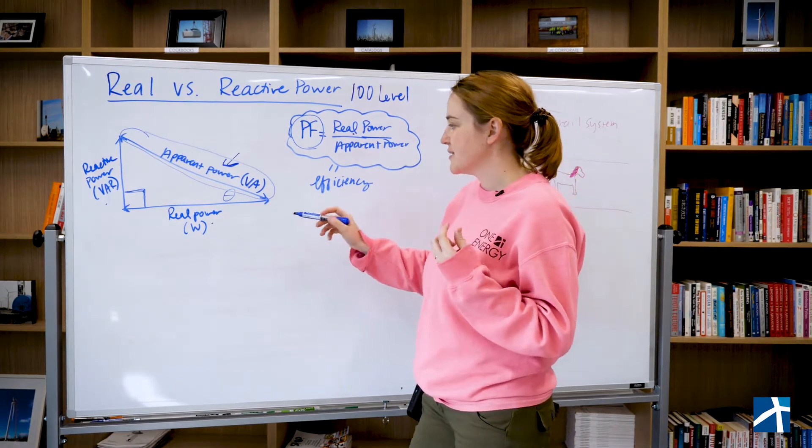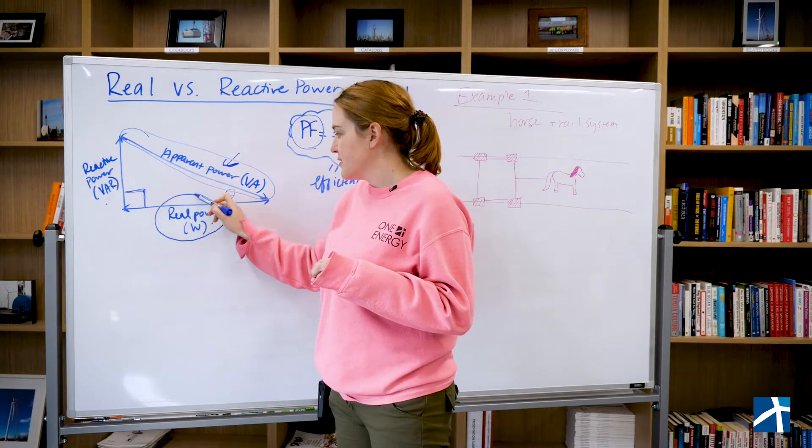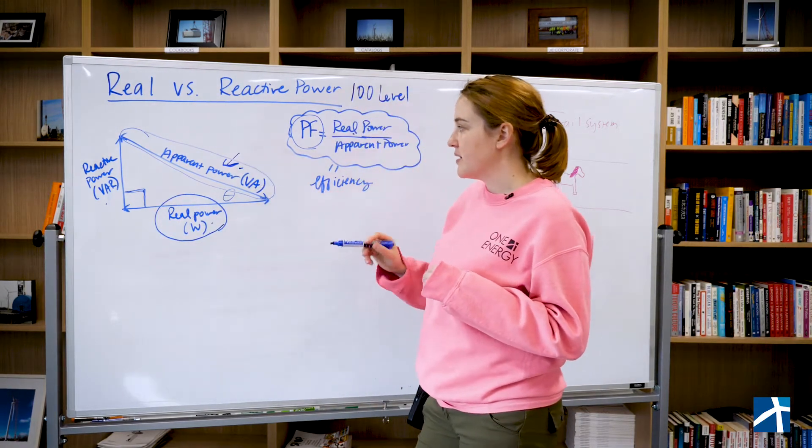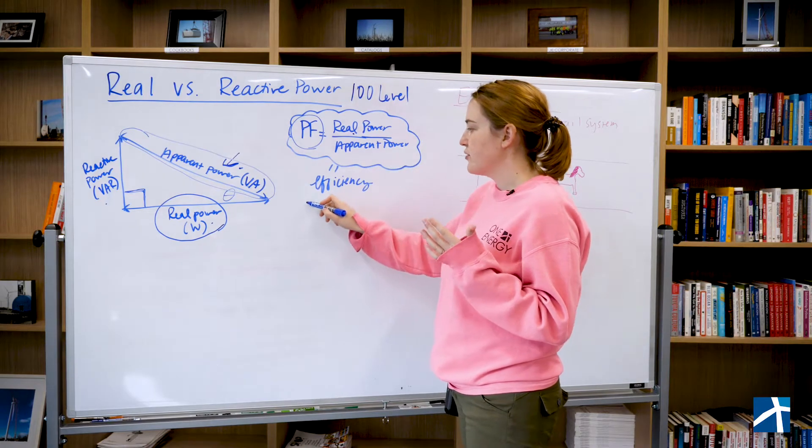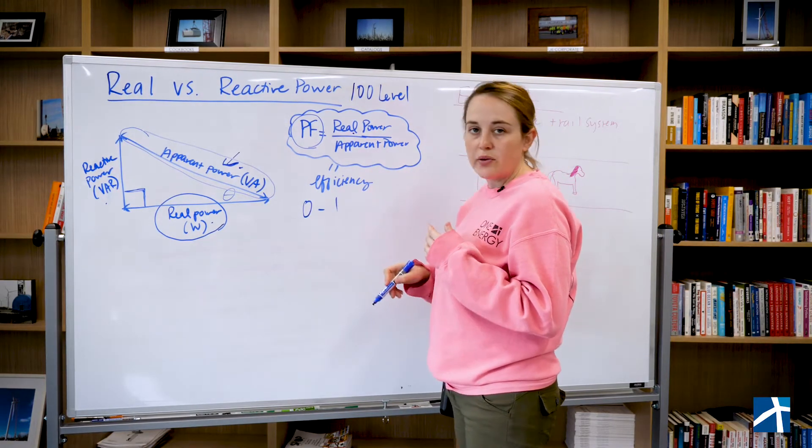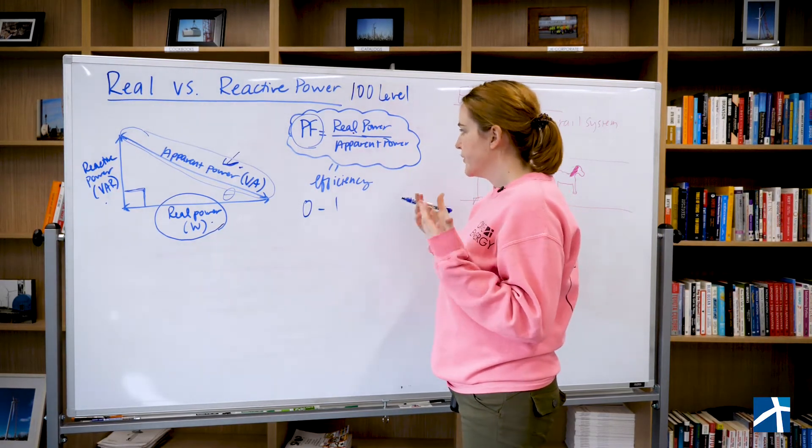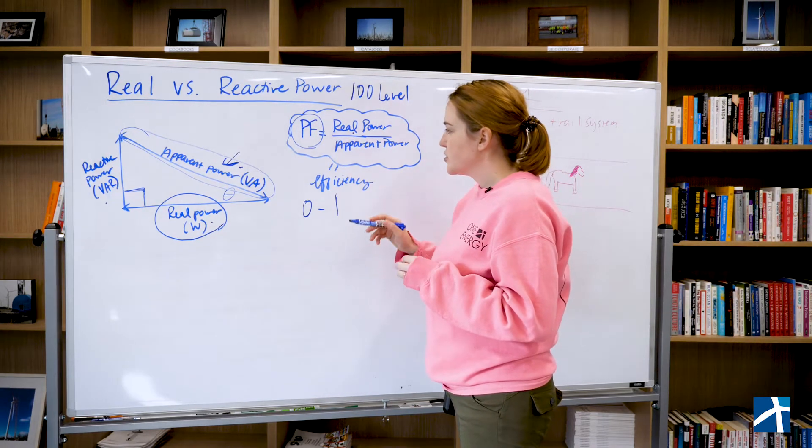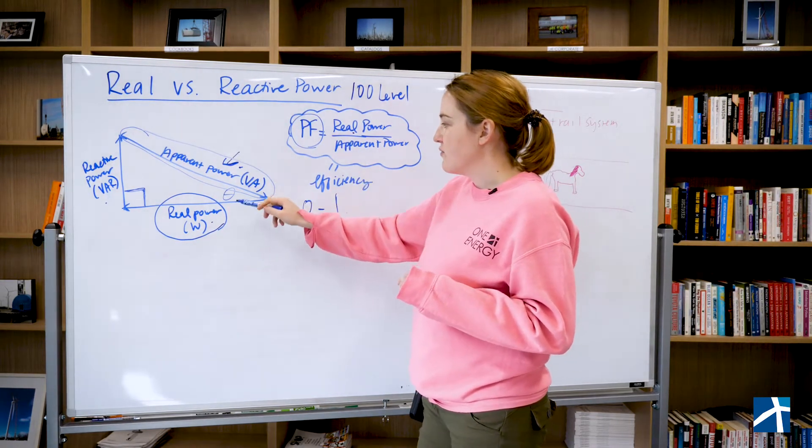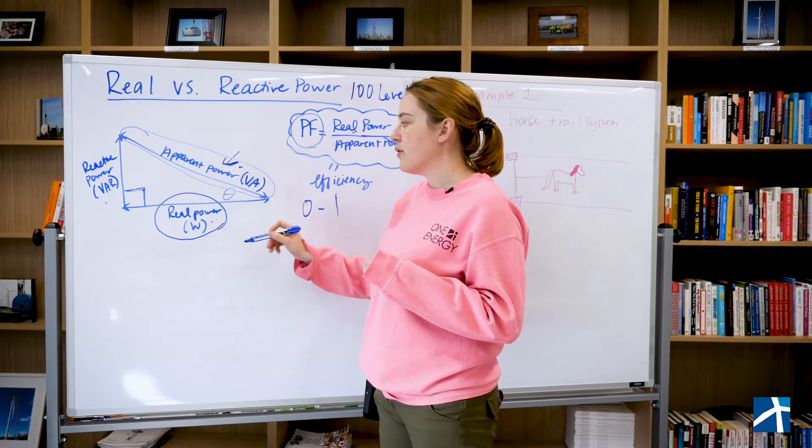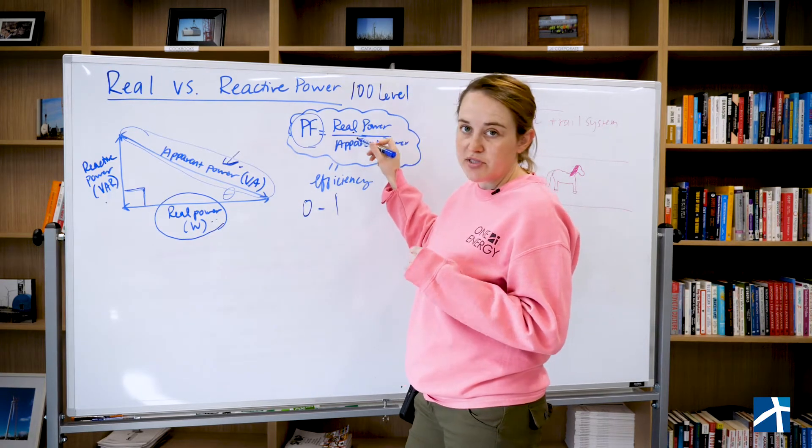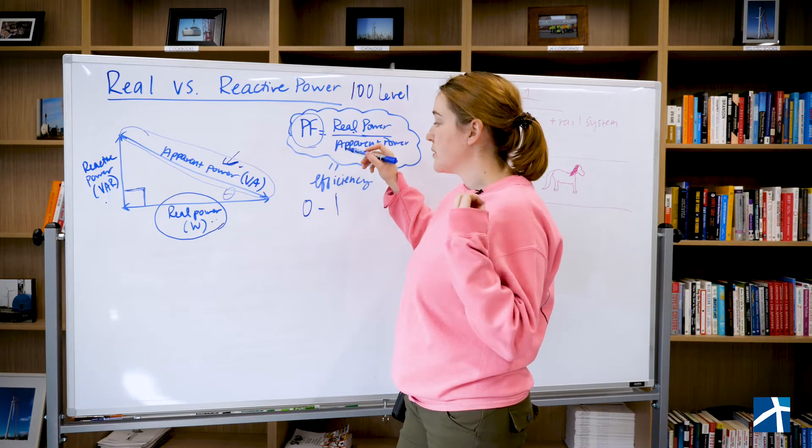What that means is you're taking this leg of the vector and dividing it by the apparent power, and you're going to get some value between zero and basically one, or 100%. So if you've got a real power circuit and all you have is real power, the power factor is going to be one or 100%.